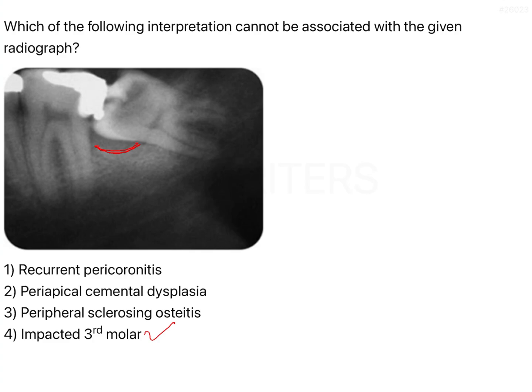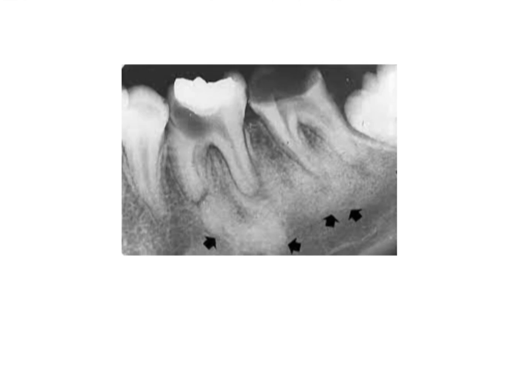When a patient has frequent and recurrent pericoronitis, as seen on a radiograph, food impaction occurs between the second and third molar or distal to the third molar. It becomes difficult to clean, microorganisms get lodged there, start fermenting, and eventually cause pericoronitis, which leads to periodontitis and bone loss in that region.